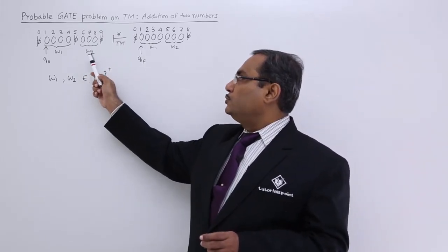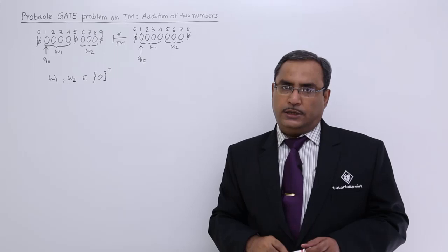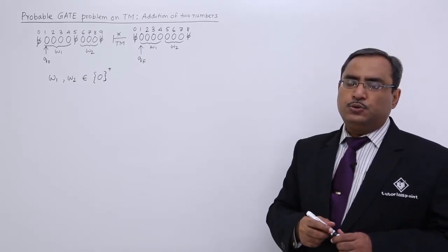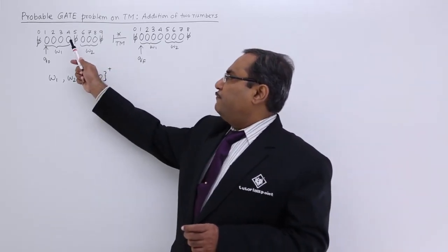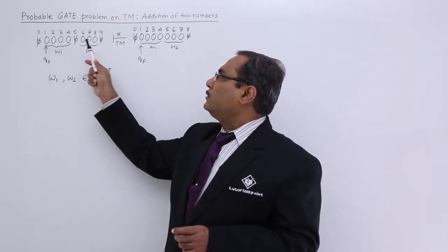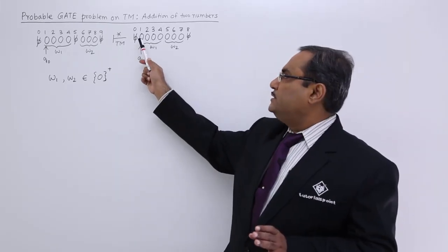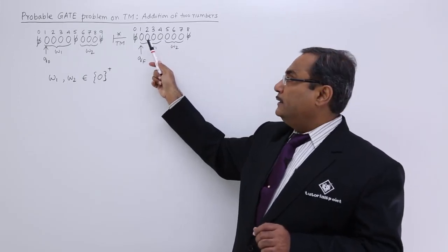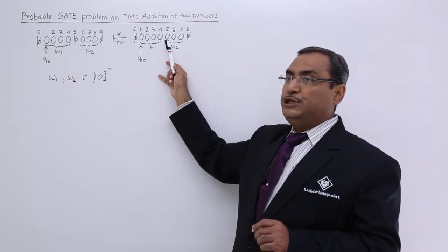Here W1 and W2 are two strings that belong to 0 whole plus. Now in this way we are going to solve this problem. At first let us do the planning then we shall go for the solution. You see the first W1 is not suffering any kind of movement or changes. We shall only traverse through this W1 whole string and then the blank at the fifth place will be replaced by 0.